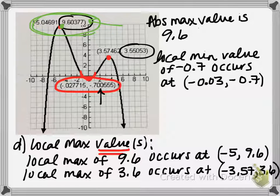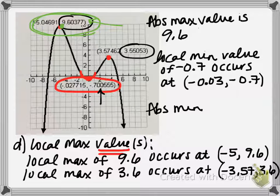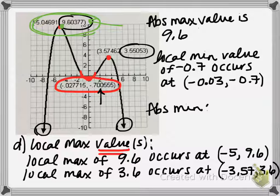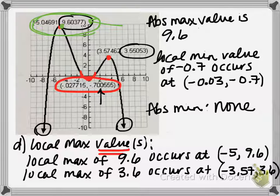Lastly, we have our absolute minimum — looking for the lowest point on the graph. But in this case, because these arrows indicate that the graph continues downward forever, this graph never reaches a lowest point. So in this case, we do not have an absolute minimum value. We have none.